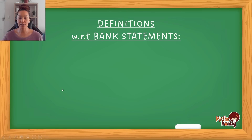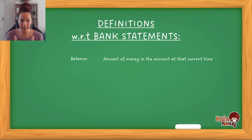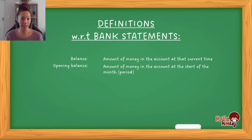There are a couple of definitions that for maths literacy are very important that you understand. The first is really just looking at the balance. A balance in a bank account refers to the amount of money in the account at that current time. Then you have opening balance, which means the amount of money in the account at the start of the month or a specific period. So if you're looking at the month of February, from the 1st of February, how much money did you have in there — that would be your opening balance. And then at the end of the month would be your closing balance.